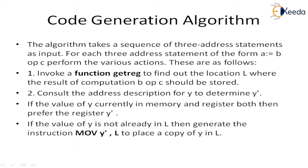For each three-address statement of the form a = b operator c, the algorithm performs various actions. First, the code generation algorithm invokes the function get_register to find out the location where the result of computation of b operator c should be stored.